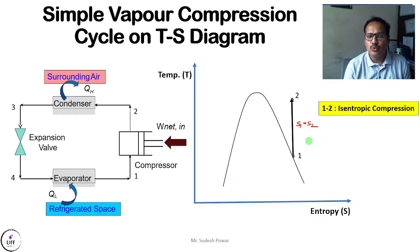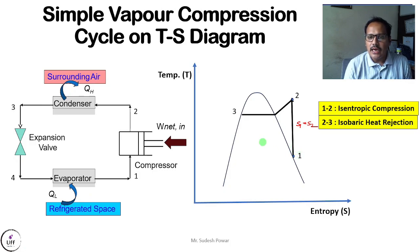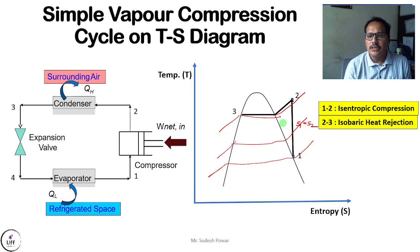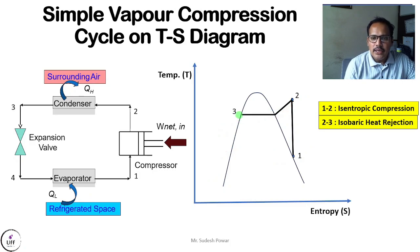Process 2 to 3 takes place in the condenser and is isobaric heat rejection — heat is rejected to the surroundings at constant pressure. On the TS diagram this is shown along a constant pressure line. At the end of the condenser the refrigerant is in liquid state, so point 3 is plotted on the saturated liquid line.